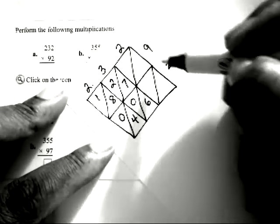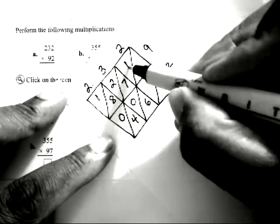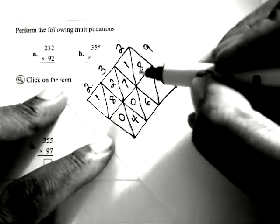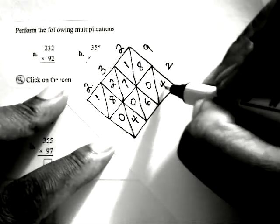Then the 2 will be multiplied by these two numbers here. 2 times 9, that's 18, so the 1 goes there and the 8 goes here. 2 times 2 will be 4, so the 0 goes here and the 4 goes there.